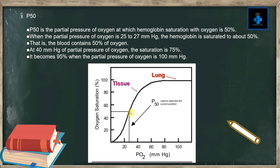At 40 mmHg partial pressure of oxygen, the saturation corresponds to 75%. It becomes 95% when the partial pressure of oxygen is 100 mmHg.